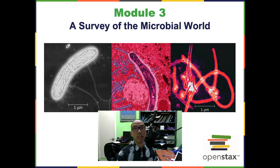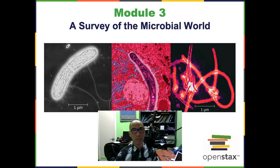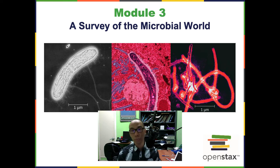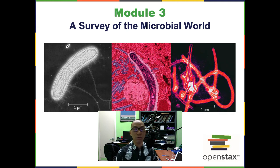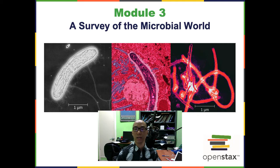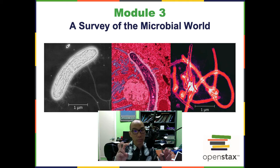Much of our semester is going to be spent talking about bacteria and viruses, which are the exciting parts of microbiology. Module 3, however, gives us a little survey of the other microbes out there — the eukaryotic microbes, some of the things they do, and some of them produce very significant disease. We'll start a little bit by talking about bacteria, and then we'll focus on some of the other microbes.